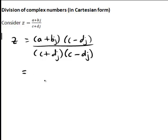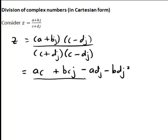Now we expand out numerator and denominator in the usual way. So ac plus bcj minus adj minus bdj squared on the numerator, and on the denominator c squared plus dcj minus dcj minus d squared j squared.